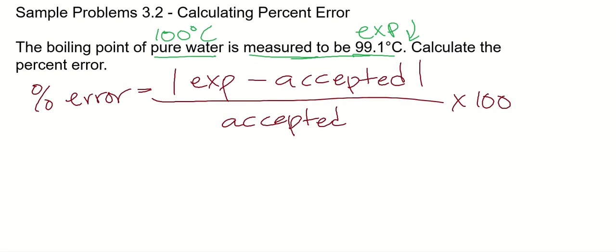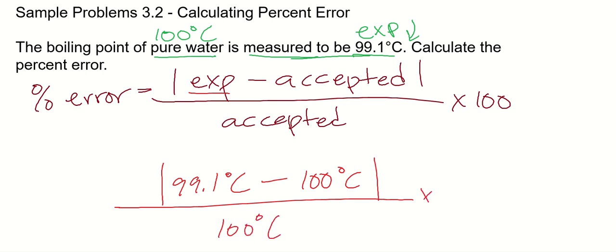All right, so the experimental value is what was measured, so 99.1 degrees Celsius, and the accepted value, assuming this is on Earth and standard pressure, is 100. Water boils at 100 degrees Celsius. All right, so take the absolute value of that, and then put that all over 100 degrees Celsius, multiply by 100, and we'll get our answer.